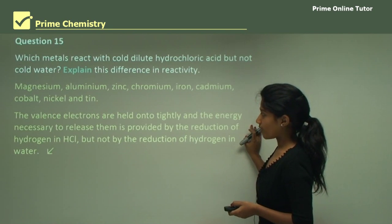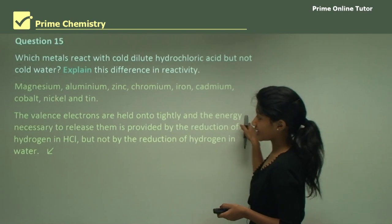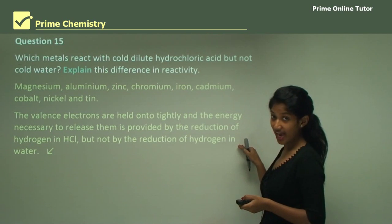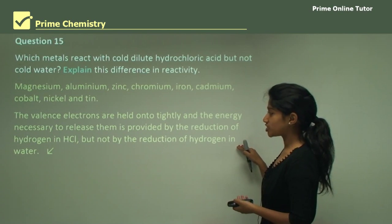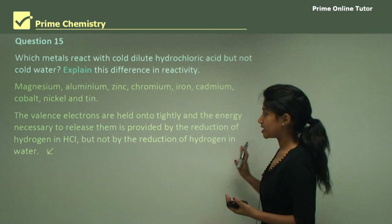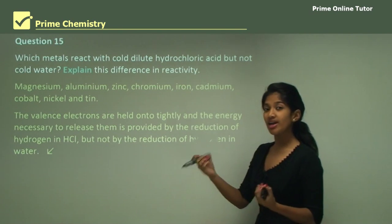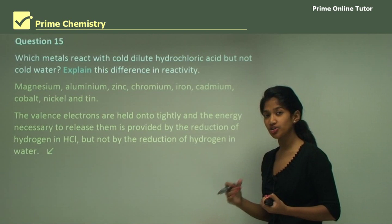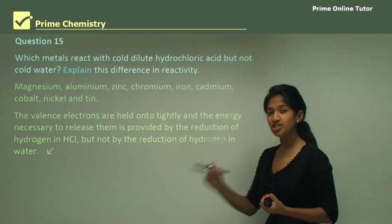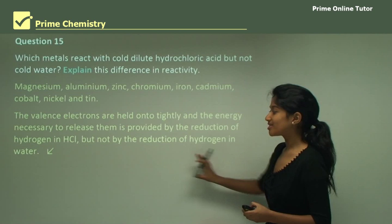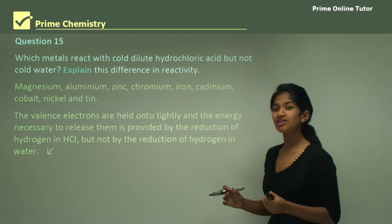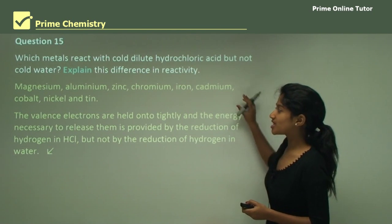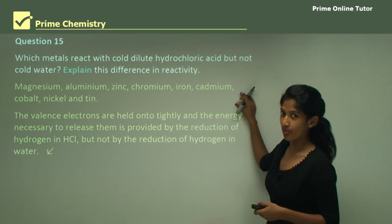The valence electrons are held too tightly, and the energy necessary to release them is provided by the reduction of hydrogen in HCl but not by the reduction of hydrogen in water. So what happens is the valence electrons in these metals are tightly held, and with the reduction of hydrogen in the hydrochloric acid, that energy is provided. But the reduction of hydrogen in water is not sufficient to release these valence electrons — that's why these metals react with acid but not water.